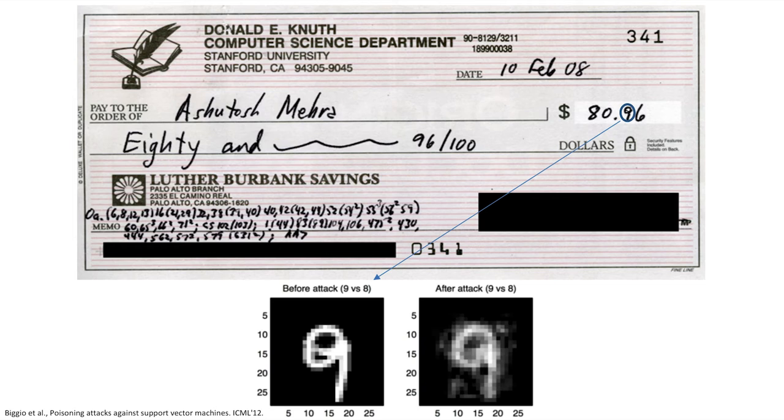Actually, adversarial AI can be applied to other domains as well, for example machine vision systems. If the following check is analyzed by a handwriting recognition system, the total amount will be expected probably correctly. However, by adding some adversarial noise, for example in the digit nine, we can fool the system and make it think it is the digit eight.